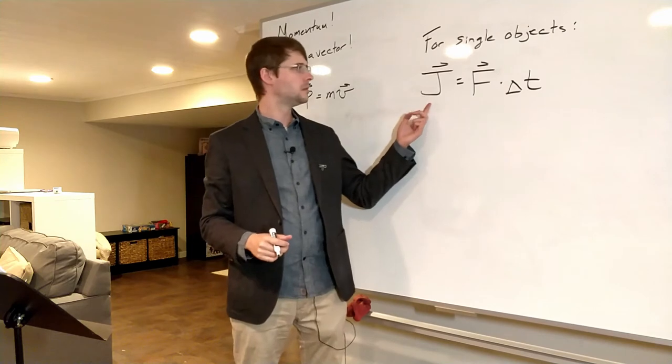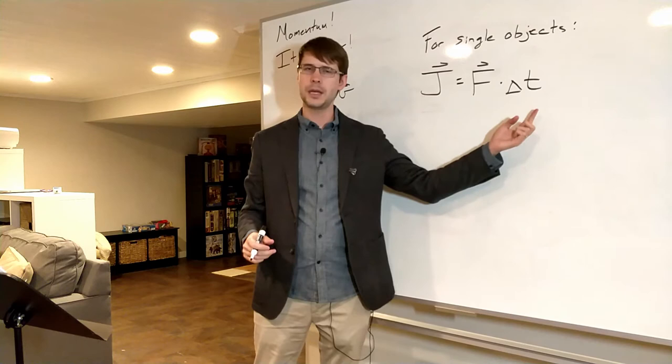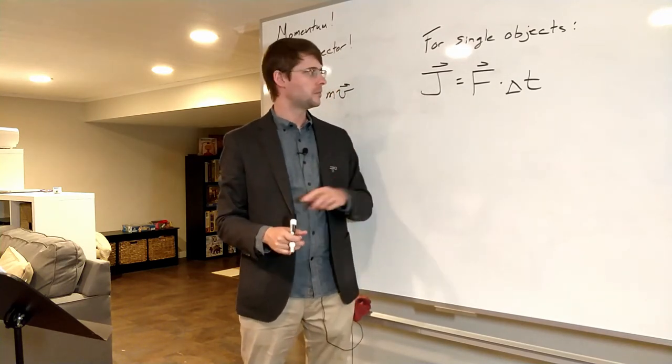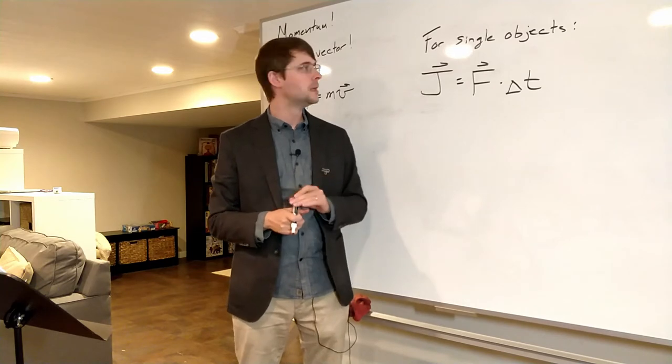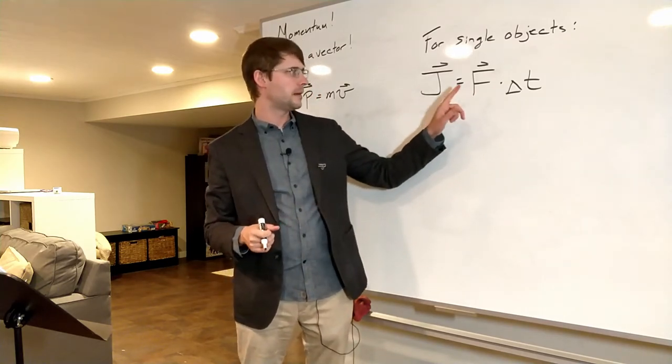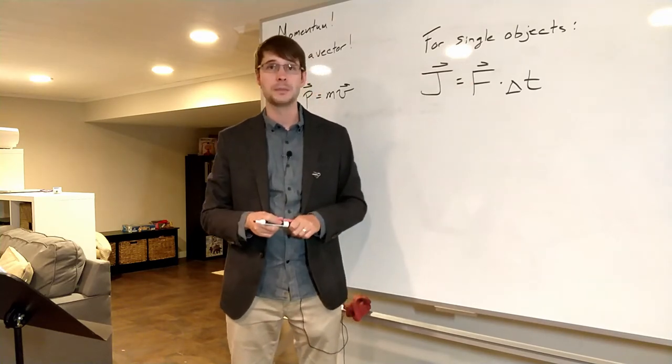This is our equation for impulse. Impulse is equal to the force times the change in time. These are both vectors—the impulse and of course the symbol for impulse is a capital J because impulse starts with a J. Then here we've got force and delta t, the amount of time that that force is applied for.